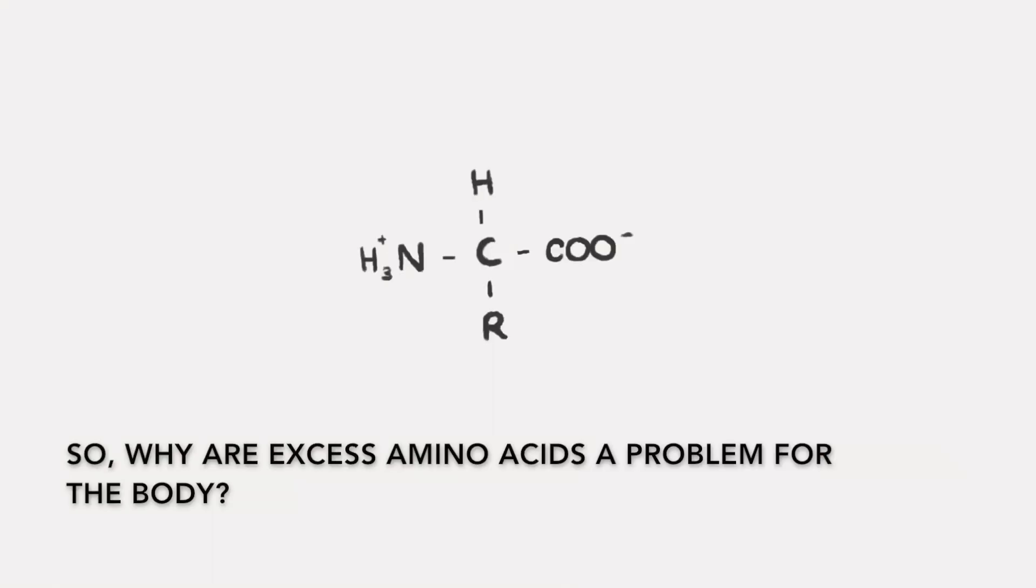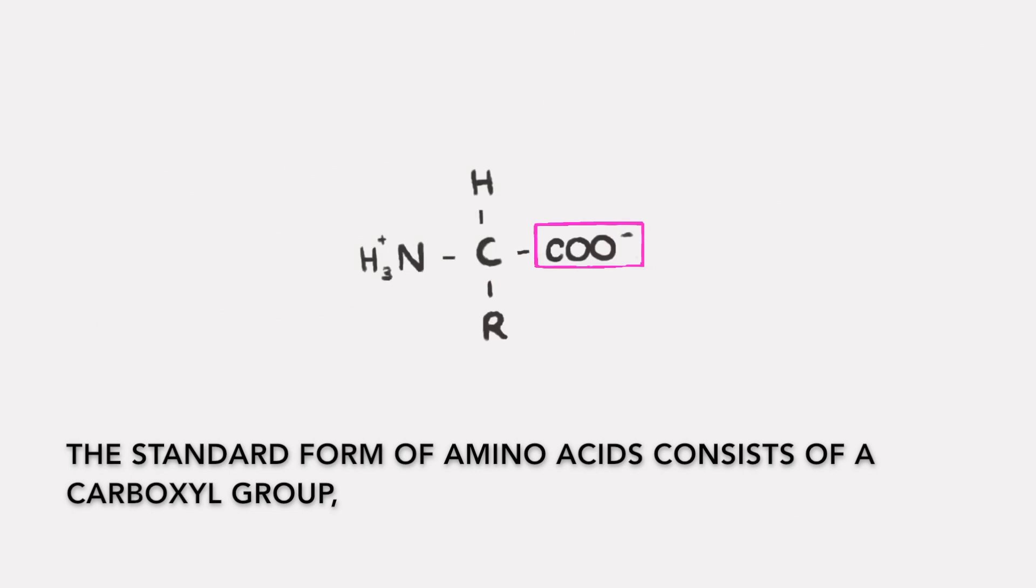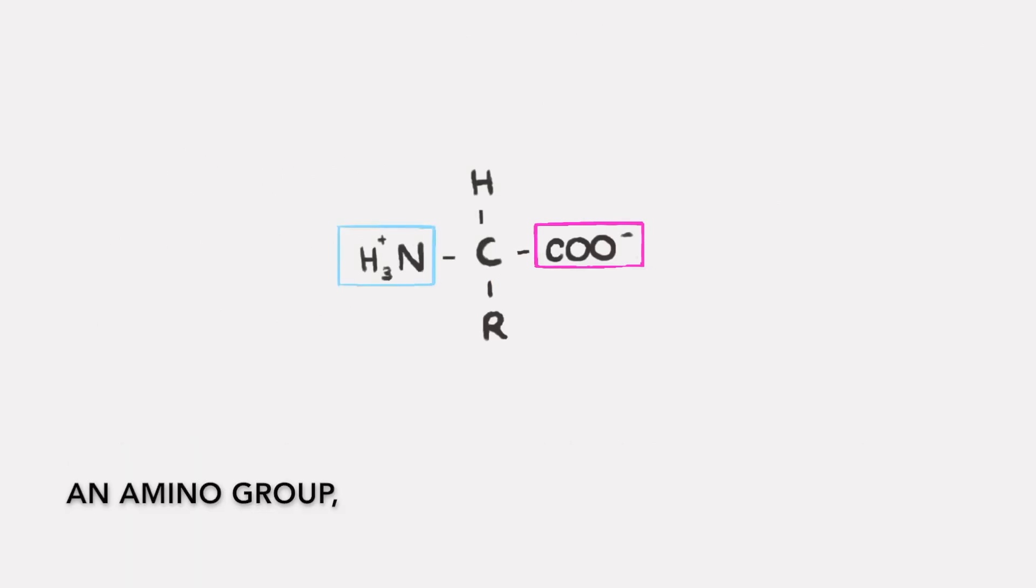So, why are excess amino acids a problem for the body? Let's look at its structure. The standard form of amino acids consists of a carboxyl group, an amino group, a central carbon, one hydrogen, and an R group variant.